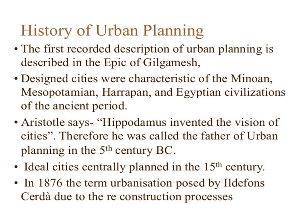This slide refers to the history of urban planning. The first recorded description of urban planning is described in the Epic of Gilgamesh. Designed cities were characteristics of Minoan, Mesopotamian, Harappan and Egyptian civilizations of the ancient period. As per Aristotle, Hippodamus invented the vision of cities; therefore he was called the father of urban planning in the 5th century BC. The ideal city was centrally planned in the 15th century. In 1876, the term 'urbanism' was coined by Ildefons Cerdà due to the reconstruction process.